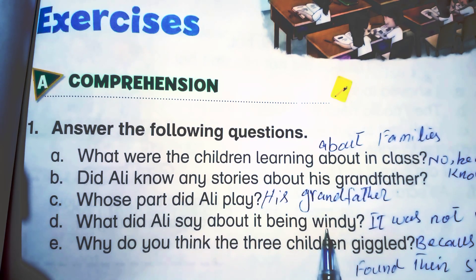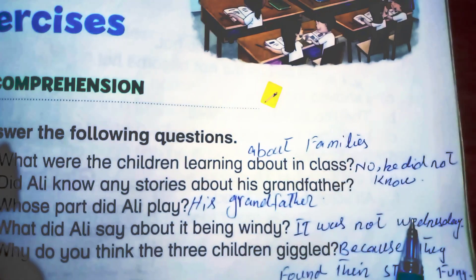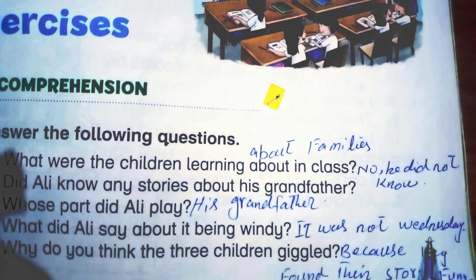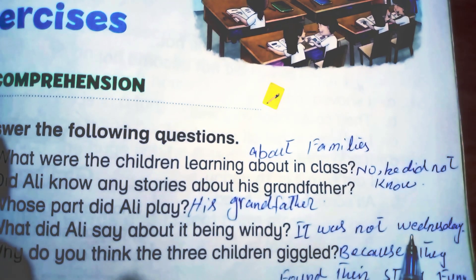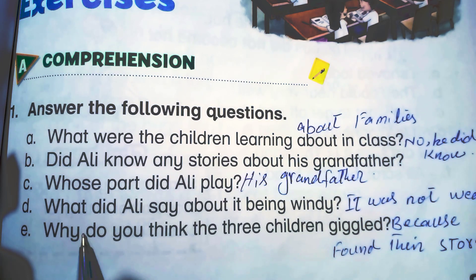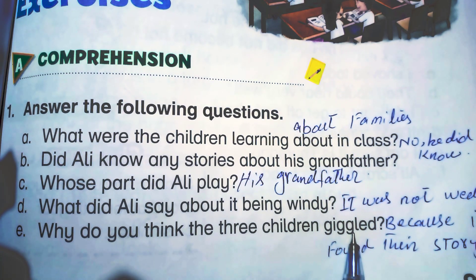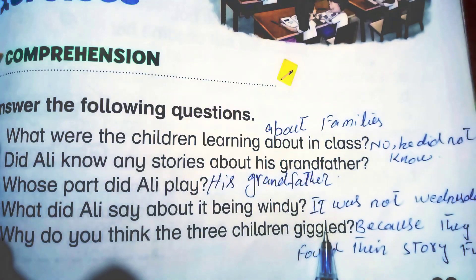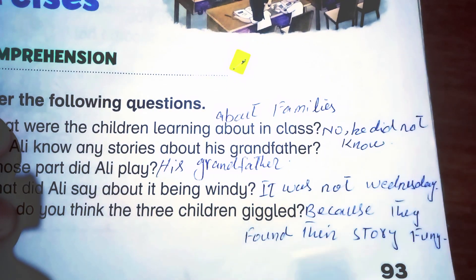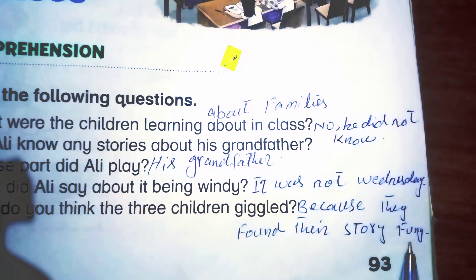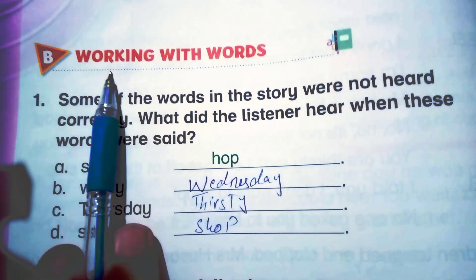Ali said it was windy — the wind was coming. And what did Zara hear? She heard 'Wednesday.' She said, 'No, no, it is not Wednesday today.' This is because they have a hearing problem — when he says 'windy,' she understands 'Wednesday.' Next question: Why did the three children giggle? Because they found their story funny — they had made a humorous, entertaining story, and that is why all three were smiling.